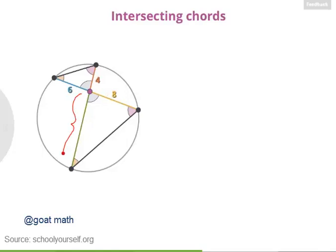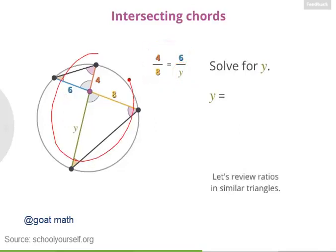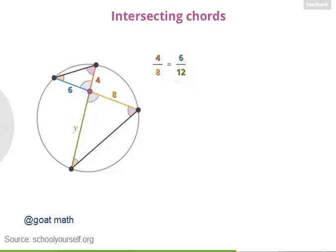Since these two triangles are similar, their sides are proportional. Let's call the length of this green segment y. Then the ratio of these two corresponding sides, 4 and 8, must equal the ratio of these two corresponding sides, 6 and y. Solving this equation gives y equals 12, meaning this segment must have a length of 12. You can always construct two similar triangles from intersecting chords.